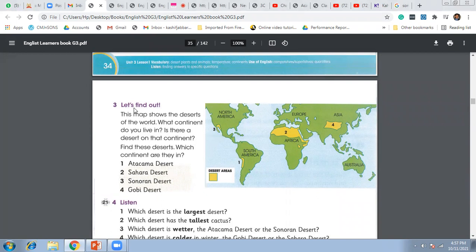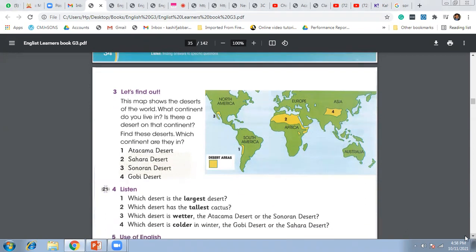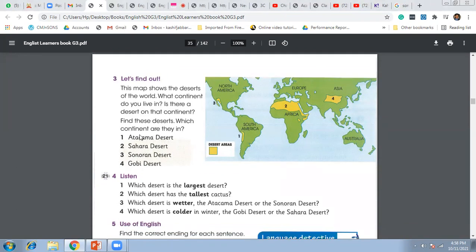It was question number three, let's find out. Actually, we have done this question in the previous class. We're going to ask you the questions today. So there were many boys who were not able to answer which continent these four deserts exist. The Atacama Desert is in South America, Sahara Desert is in North Africa, Sonoran Desert is in South America, and Gobi Desert is in Asia.